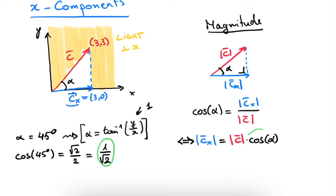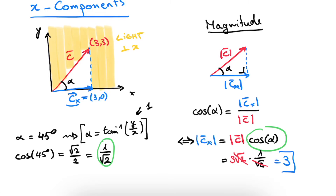We can now fill in the numbers. The magnitude of c was calculated to be 3 times the square root of 2. Multiplying this by 1 over the square root of 2 cancels the square roots of 2, and we are left with simply 3 — which is indeed what we found earlier. The magnitude of cx, the vector associated with the x component of c, is equal to 3. So graphically, we represent cx by sending in light perpendicular to the x axis and looking at the shadow of the c vector, and the magnitude is given by |cx| = |c| · cos(α).